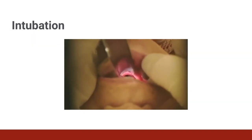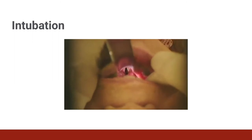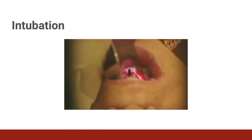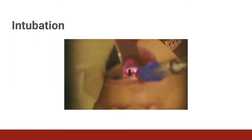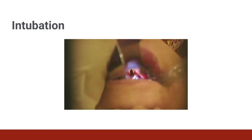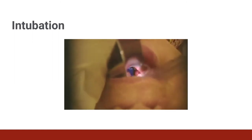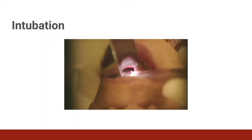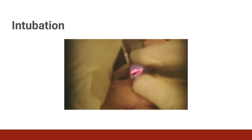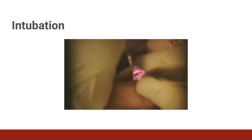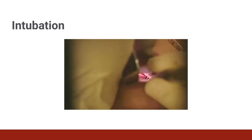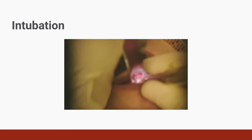Once you visualize the vocal cords, take the ET tube in your right hand and introduce it from the right side of the mouth, passing through the cords, leaving the tube at a depth of approximately three times the tube diameter. Inflate the cuff and remove the stylet.